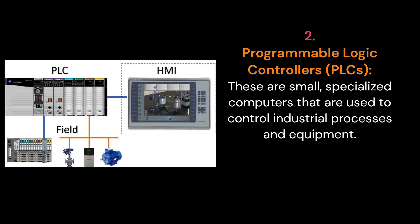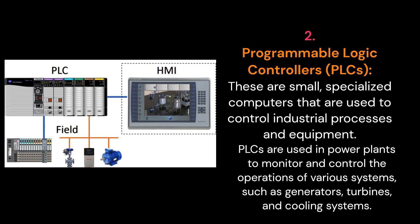2. Programmable Logic Controllers, PLCs. These are small, specialized computers that are used to control industrial processes and equipment. PLCs are used in power plants to monitor and control the operations of various systems, such as generators, turbines, and cooling systems.